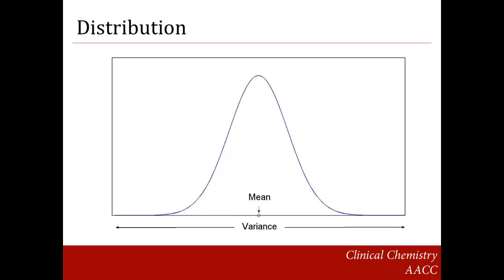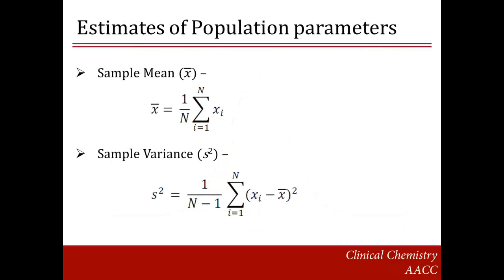The true mean, mu, and the true variance, sigma, of the distribution are parameters which can be estimated. The estimates of the true mean and variance based on a sample of observations are referred to as the sample mean x-bar and sample variance s-squared. Given a sample size n and sample data x1, x2, and so on to xn, the sample mean is an average of all data points x1 to xn, which is computed by adding up all n data points and dividing by n. The sample variance is the average of the squared deviation of each data point from the sample mean, divided by n minus 1.